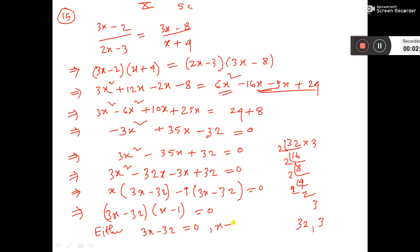Equal to 0, x minus 1 equal to 0. That means x equal to 1, 3x equal to 32, so x equal to 32 by 3. So that is the answer.